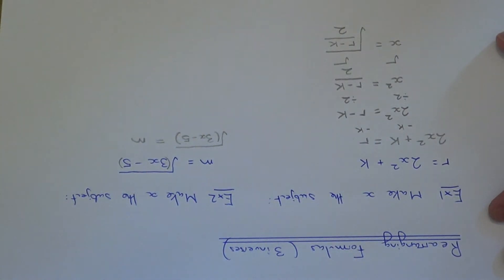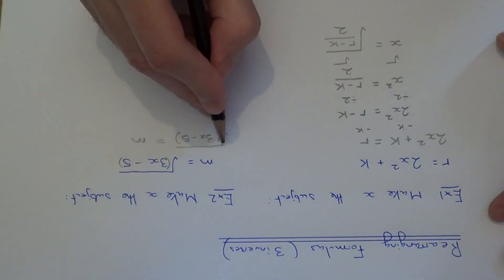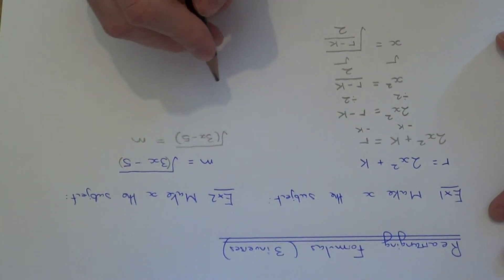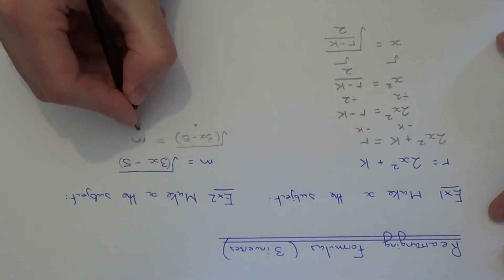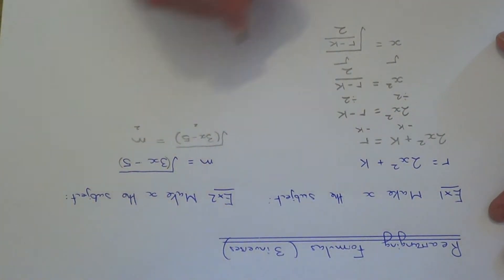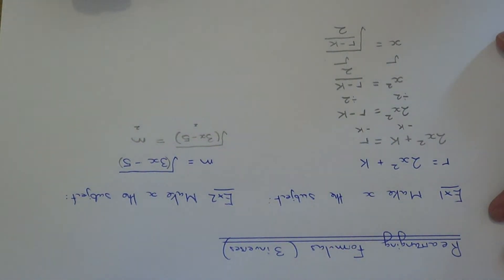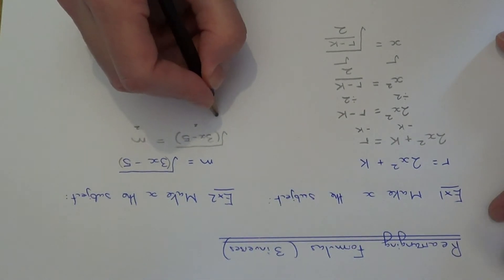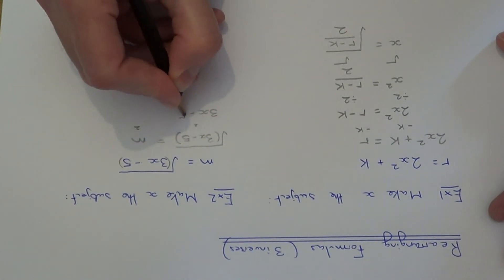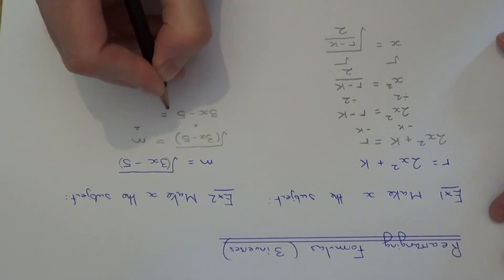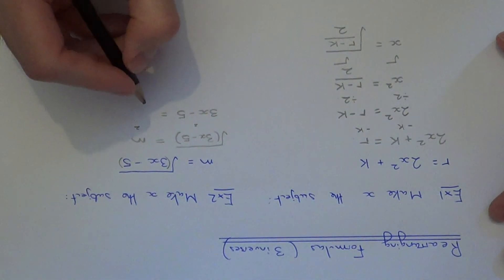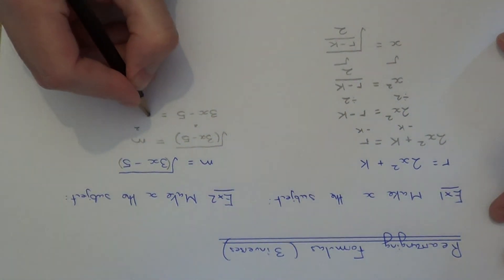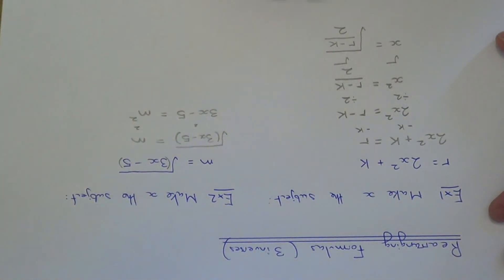Let's get rid of the square root first of all. We can do this by squaring both sides, because a square is the opposite to a square root. This will get rid of the square root on the left-hand side and leave you with 3x minus 5. And if we square the right-hand side, that will give us m squared.